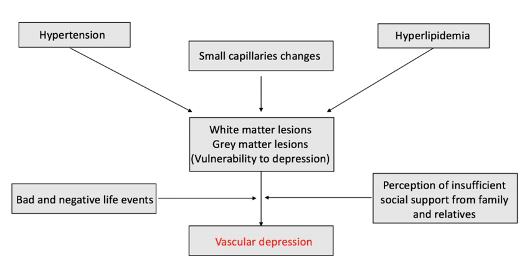There is inadequate evidence to support vascular depression as a distinct subtype of major depressive disorder due to mixed results. Specifically, it is difficult to differentiate a diagnosis of vascular depression from similar diagnoses, such as post-stroke or late-life depression. Some researchers suggest that vascular depression may be too restricted in its definition and proposed etiology; however, there is some evidence of internal validity of vascular depression which provides initial support for its classification as a unique subtype.